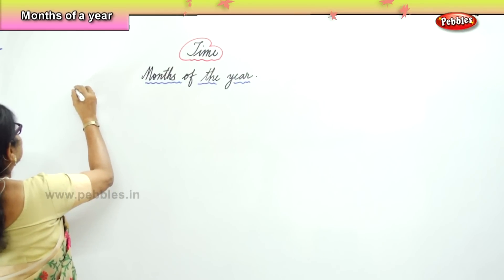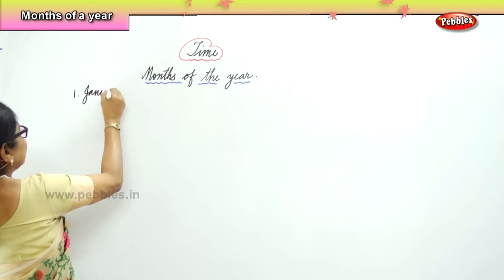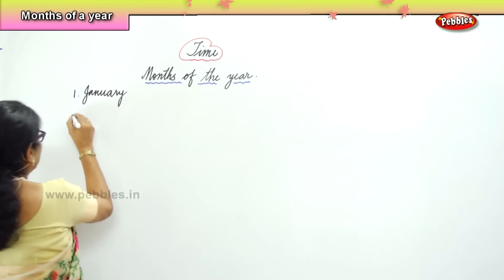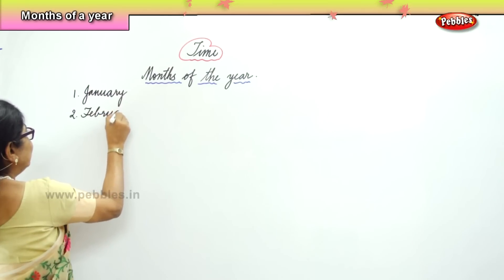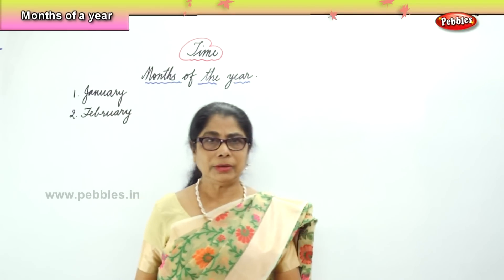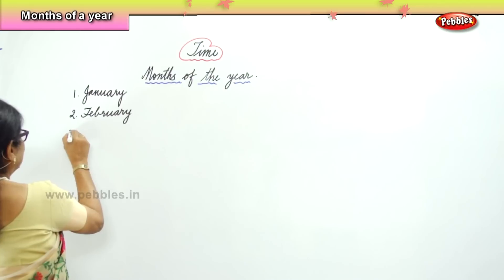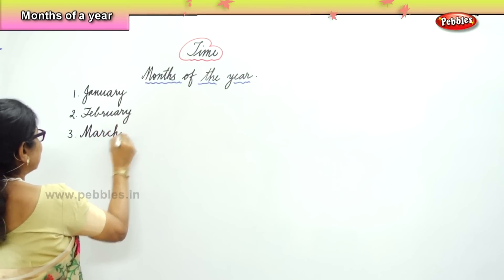The first month of the year — which is the last month of the year? December. Now, the first month of the year is January. J-A-N-U-A-R-Y. Always write it. The second month of the year is February. F-E-B-R-U-A-R-Y. February. And the third month of the year is March. M-A-R-C-H. March.